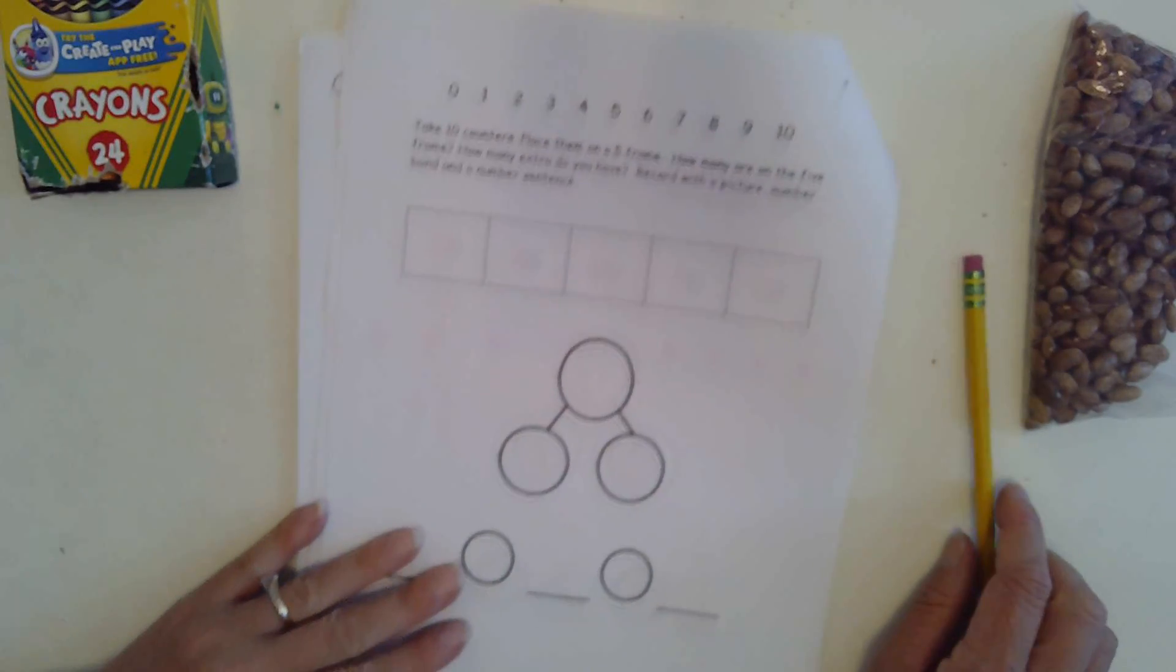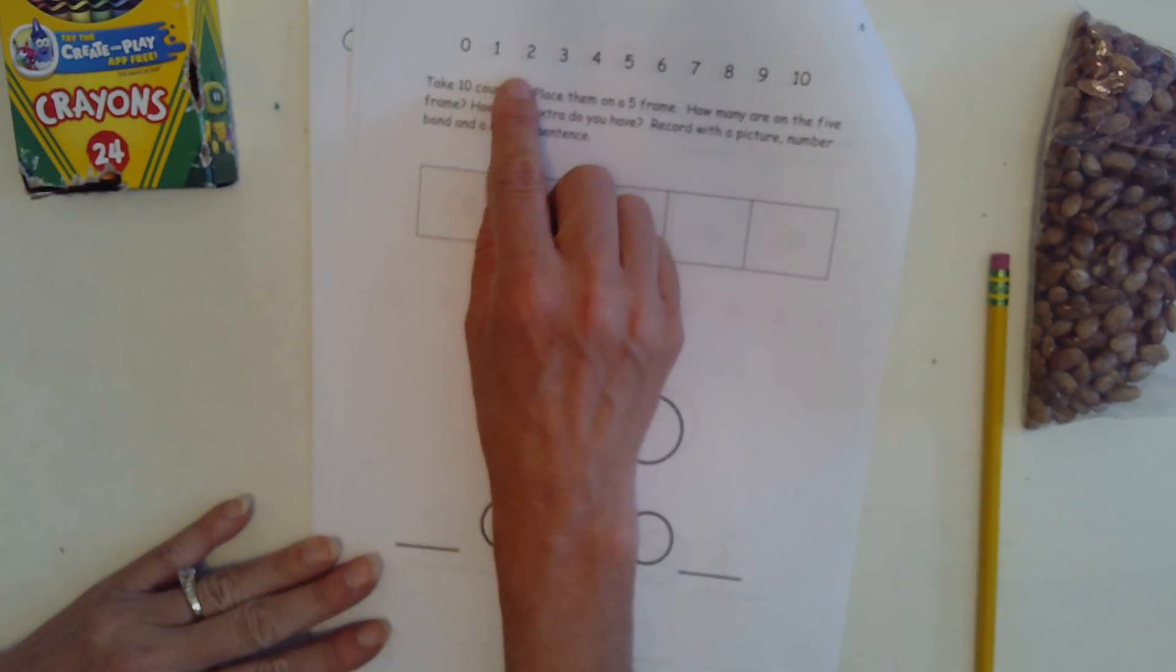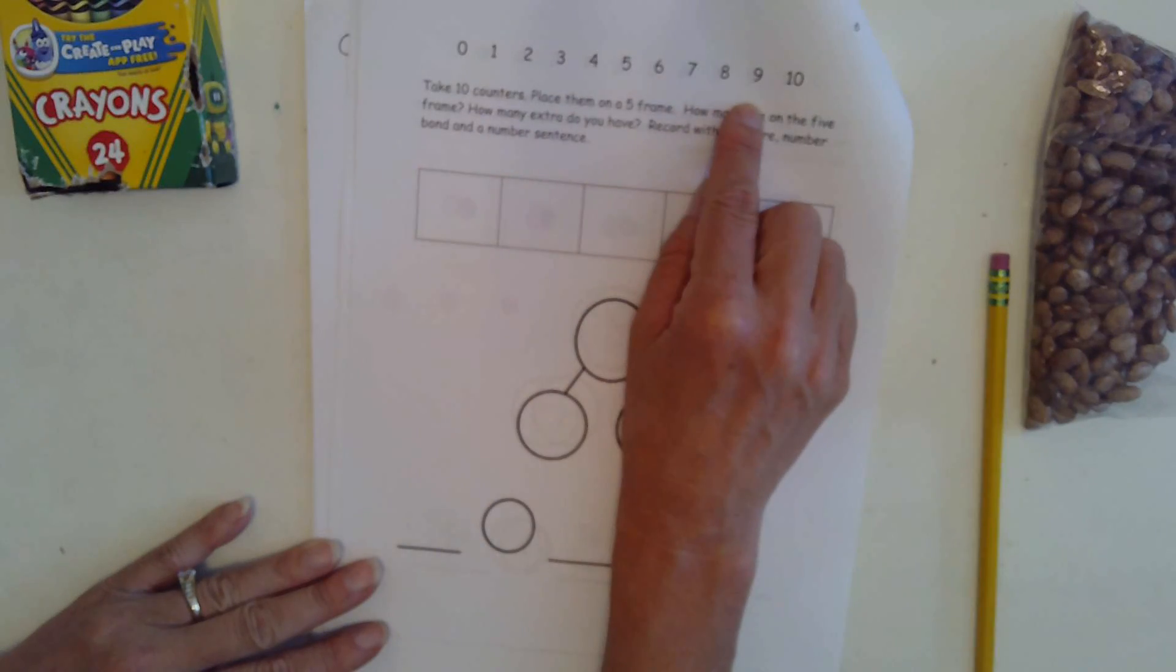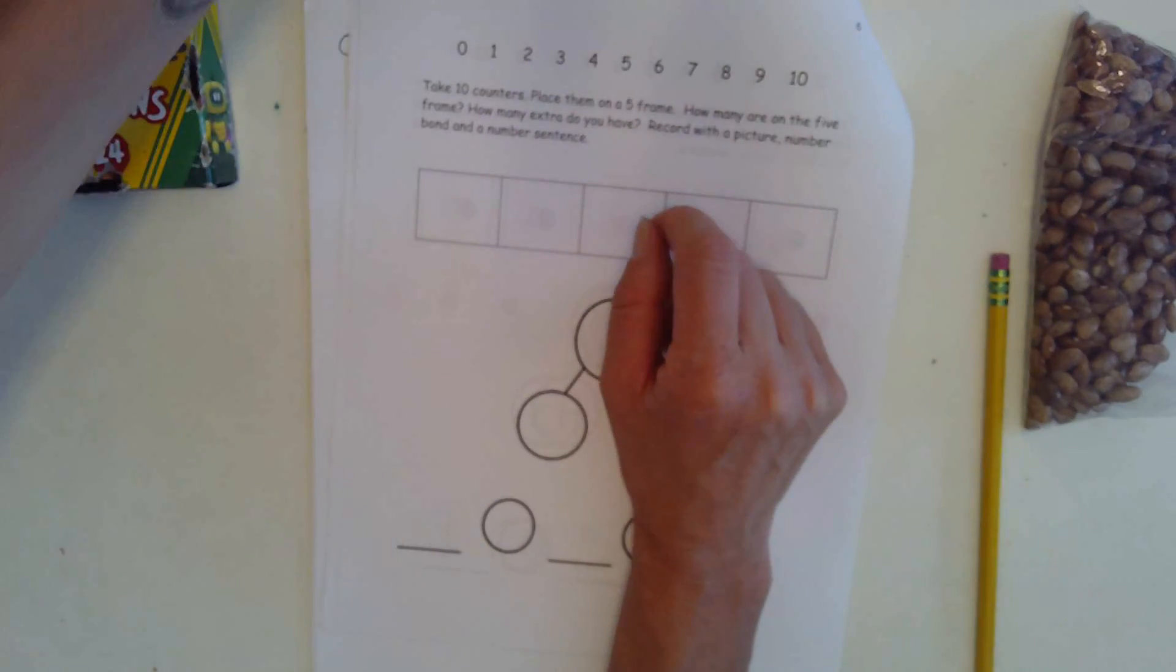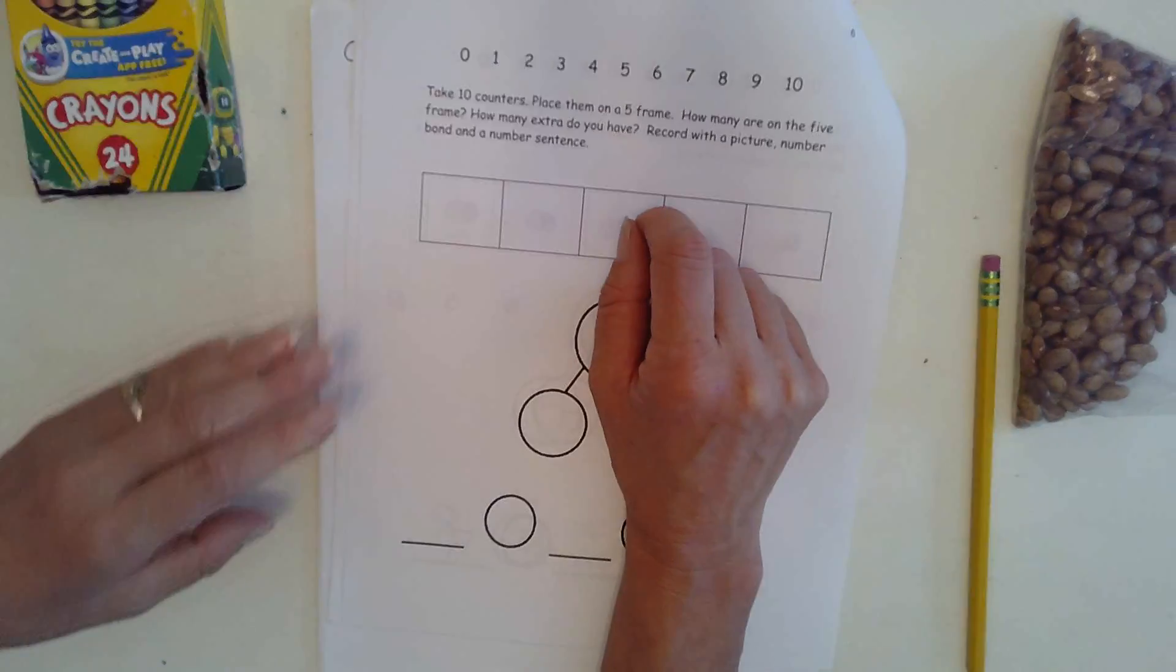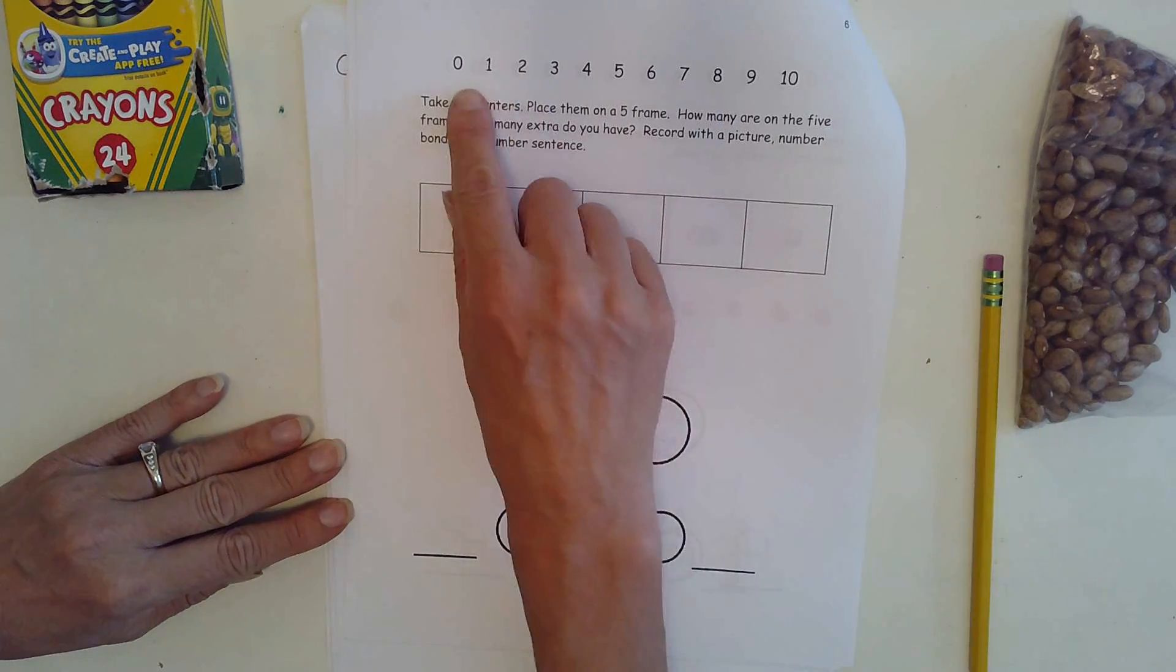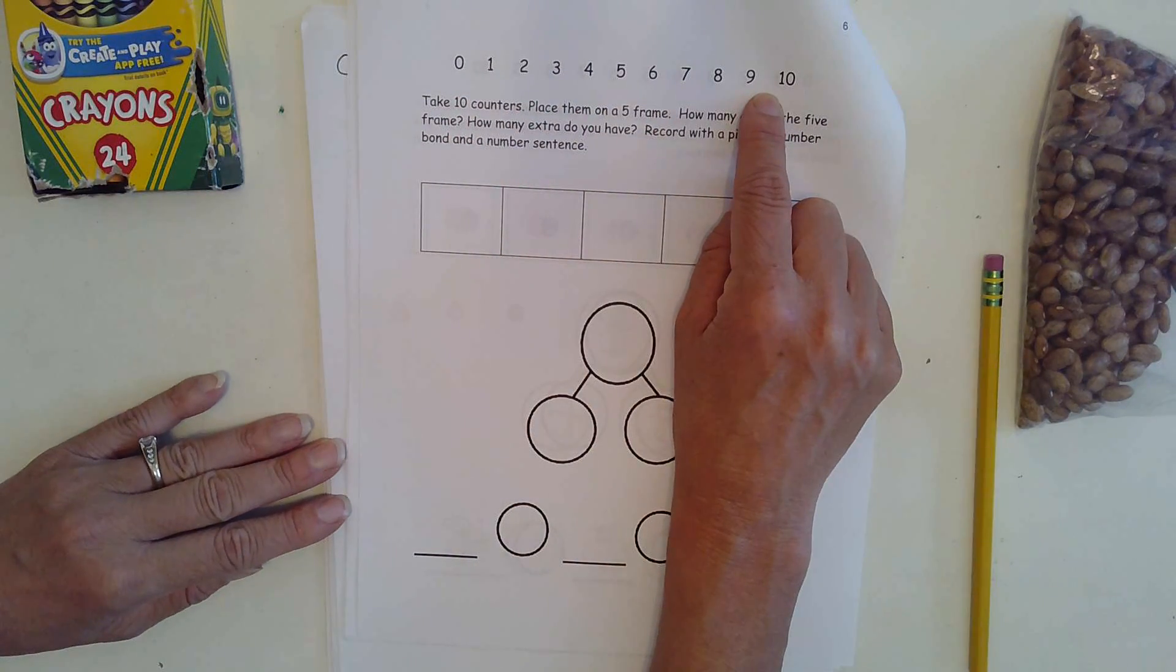Okay, we are going to use our number line to make sure that our numbers are always going the correct way. So remember to look up here if you forget which way to make a number.